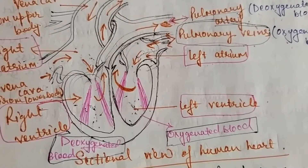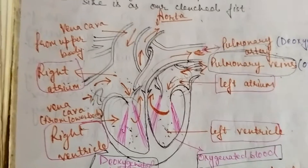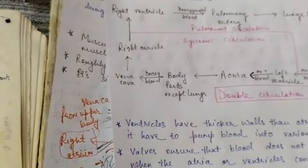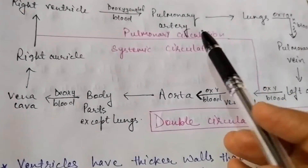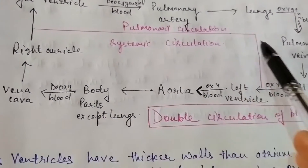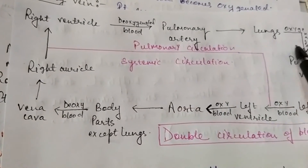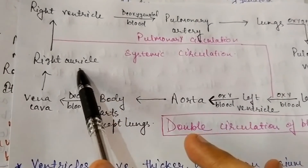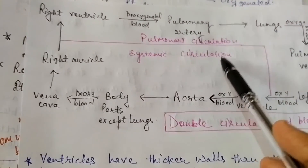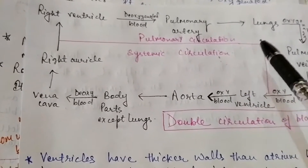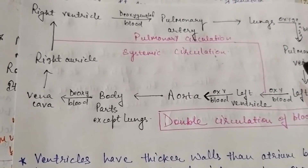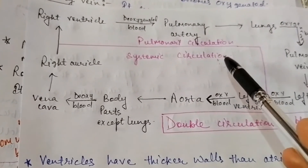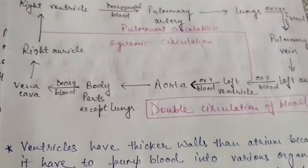There are two types of circulation. When blood travels from the right ventricle to the lungs and back to the left atrium, this is called pulmonary circulation. When blood travels from the left ventricle to the whole body and returns to the right atrium, this is called systemic circulation. In mammals and birds, which have a four-chambered heart, both together form double circulation.